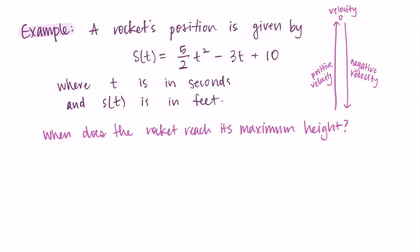So for us to find when the rocket reaches its maximum height, we want to know when the velocity, or the derivative of the position, is equal to zero. So our derivative is 5t - 3, and we're just going to set that equal to zero.